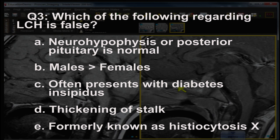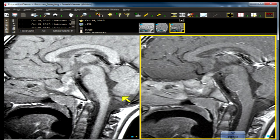Question number three: which of the following regarding LCH or Langerhans cell histiocytosis is false? A) neurohypophysis is normal, B) males greater than females, C) often presents with diabetes insipidus, D) thickening of the stalk, E) formerly known as histiocytosis X.